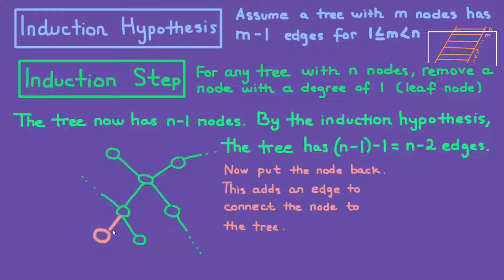Now let's put the node back into the tree. So we put back this node along with the edge connected to it. So we put the node back. This adds an edge to connect the node back to the tree. Right? It adds this edge back to it. Now the tree has n nodes with n minus 1 edges. Because before it had n minus 2 and we add one edge back. Now it has n minus 1 edge.